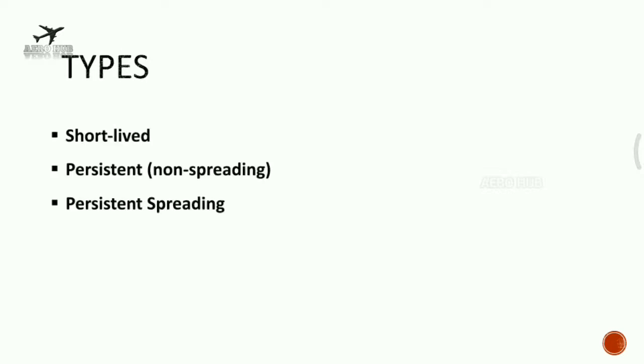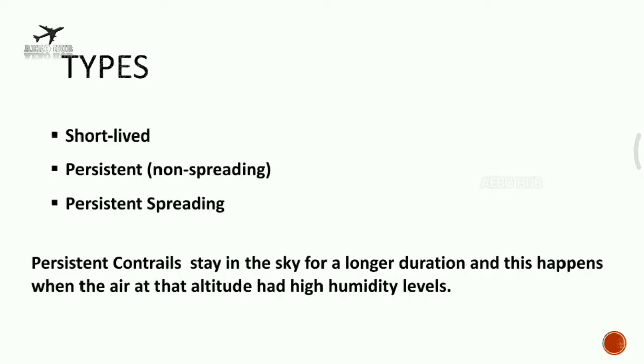Types of contrails. There are three types: short-lived, persistent non-spreading, and persistent spreading.